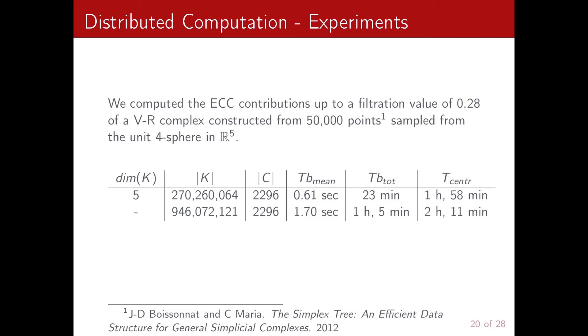So in the first case, we built simplices up to a maximum dimension of 5, while in the second one we put no constraints. So we report the number of simplices that we constructed as |K|, the number of balls in our data structure, and as you can see there are around 2,000.